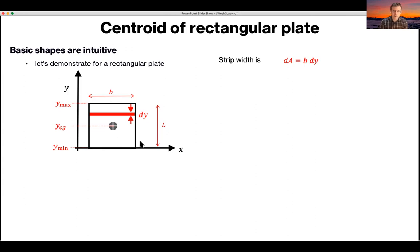So the first thing we can do is substitute this strip area as the sum of its incremental distance in y and its width B. So dA is B times dy. Using the expression from the last slide, we can say that we're going to integrate between y is equal to 0 and y is equal to L of y dy.